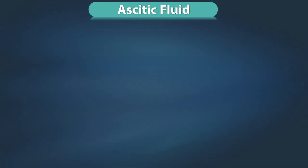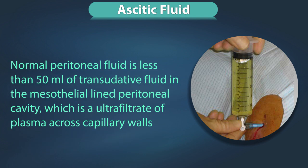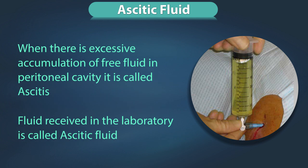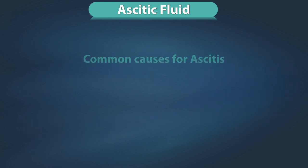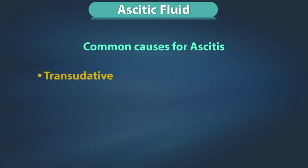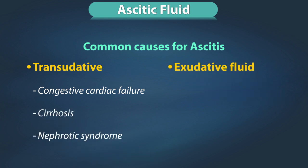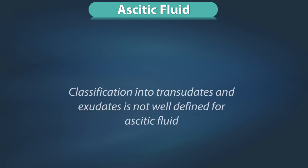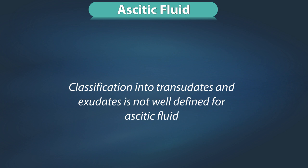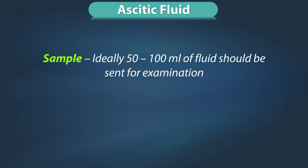Cytology: pap or Giemsa stained smears may show presence of malignant cells, the commonest being metastatic cells from breast or lung malignancy. Ascitic fluid: the normal peritoneal fluid is less than 50 ml of transudative fluid in the mesothelial-lined peritoneal cavity, an ultrafiltrate of plasma across capillary walls. When there is excessive accumulation of free fluid in the peritoneal cavity it is called ascites. Common causes include transudative ascites as seen in congestive cardiac failure, cirrhosis and nephrotic syndrome, and exudative ascites seen in infections, malignancies, traumatic causes or pancreatitis.